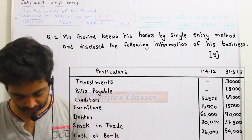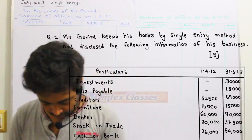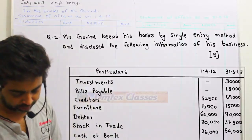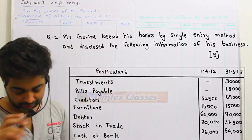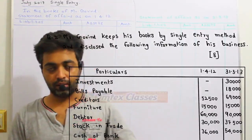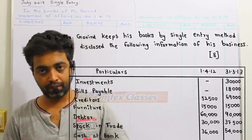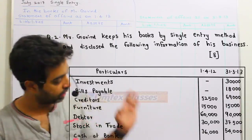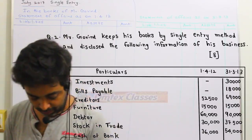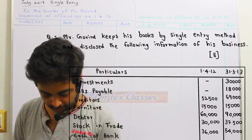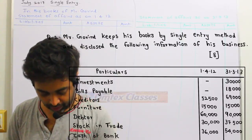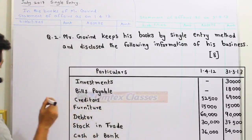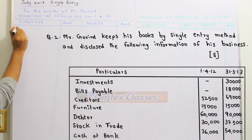I will study a separate statement for the student. What has been given in it? Investments which have been given in the last year — at the beginning or end of the year, there is no investment, so it will not come here. Bills payable also will not come because there is no amount. A creditor will come to $52,500, but the creditors will go to the liability side.